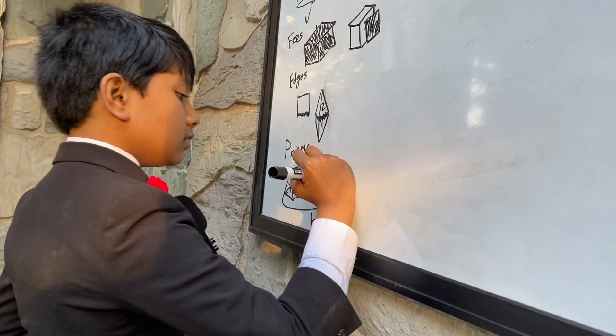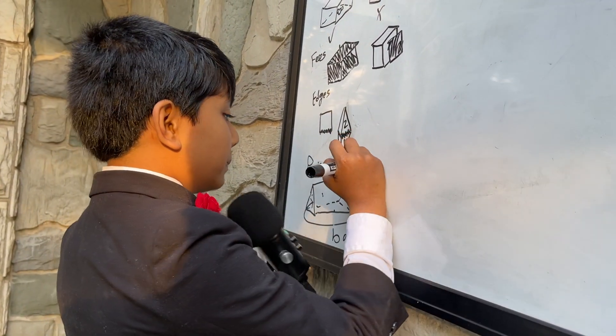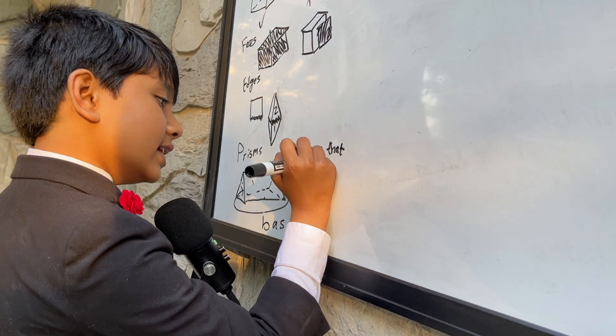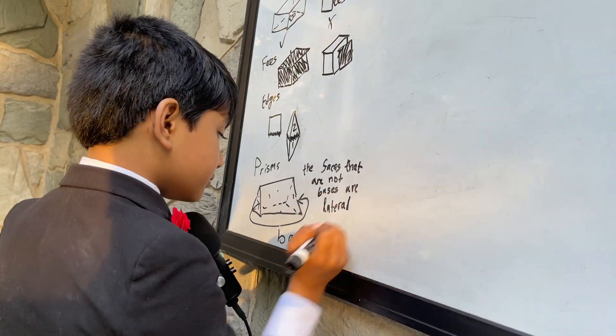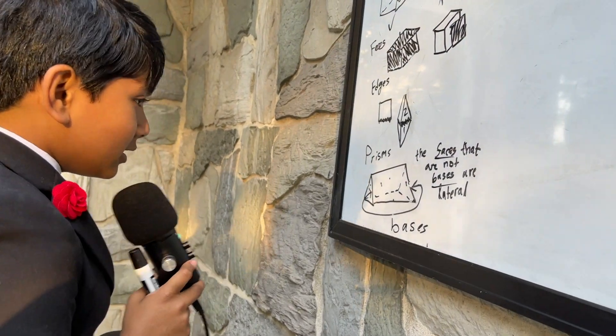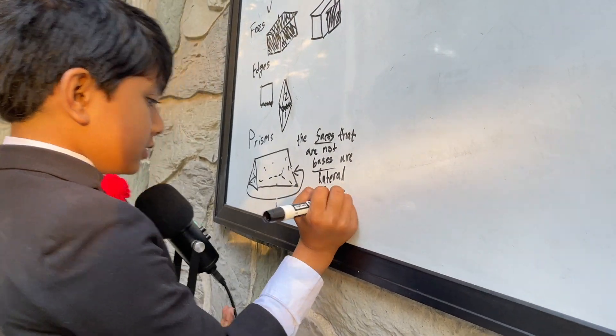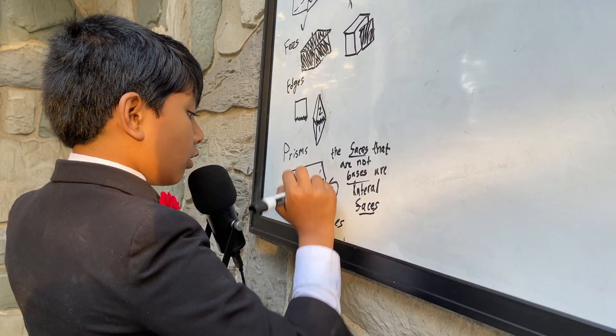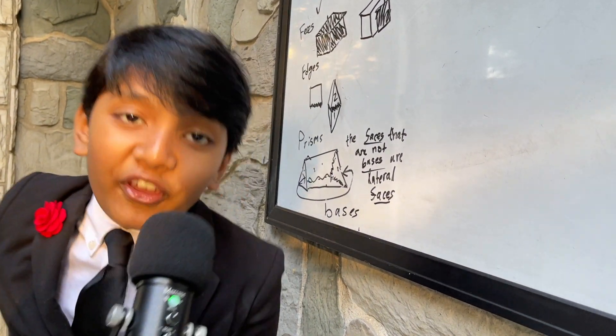These are called bases. Now, you might be wondering, what are the other sides called? Faces? Well, they are called faces, but they have a special name. The faces that are not bases are lateral faces. So, there are also lateral edges, which are just one of the edges of a lateral face.